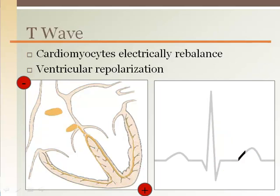Ventricular repolarization, or electrical recovery, is represented as the T wave. Although one would expect it to be the opposite of the QRS complex, it is far from it. The T wave is the sum of many cells throughout the ventricles rebalancing the ions that crossed the membrane during depolarization, and there are many differences in the rate of this activity among ventricular cells.